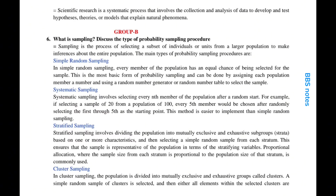What is sampling? Discuss the types of probability sampling procedures. Sampling is the process of selecting a subset of individuals or units from a larger population to make inferences about the entire population. The main types of probability sampling procedures are: simple random sampling.